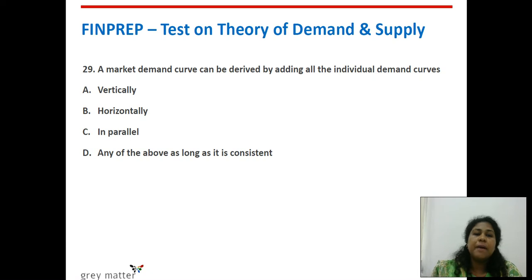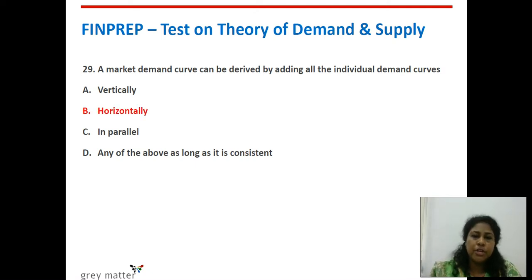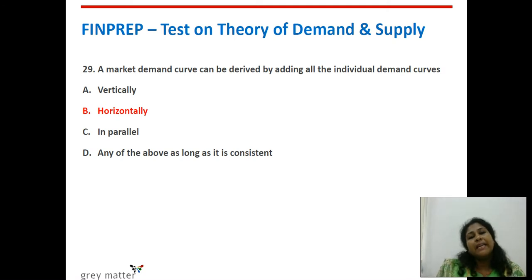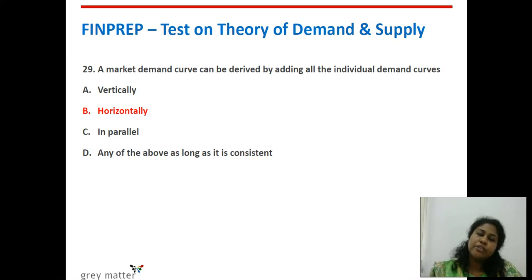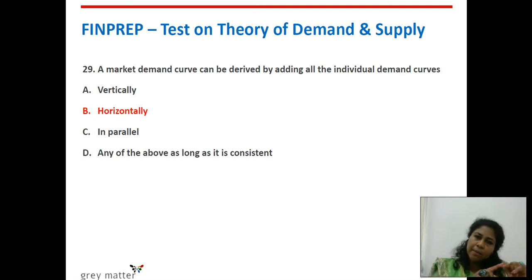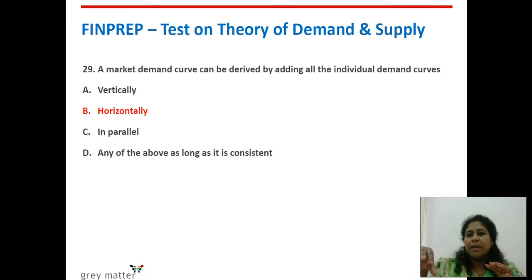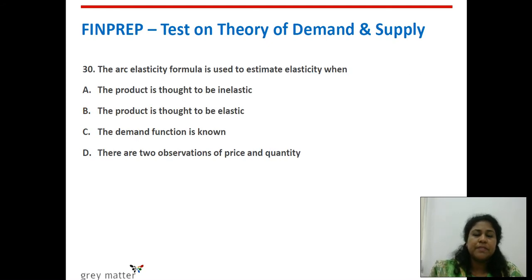Twenty-ninth question: a market demand curve can be derived by adding all individual demand curves in what manner? The right answer is horizontally. At a given price — measured on the Y-axis — you find the quantity demanded for consumer A and for consumer B, then add them. It is horizontal summation, not vertical summation.